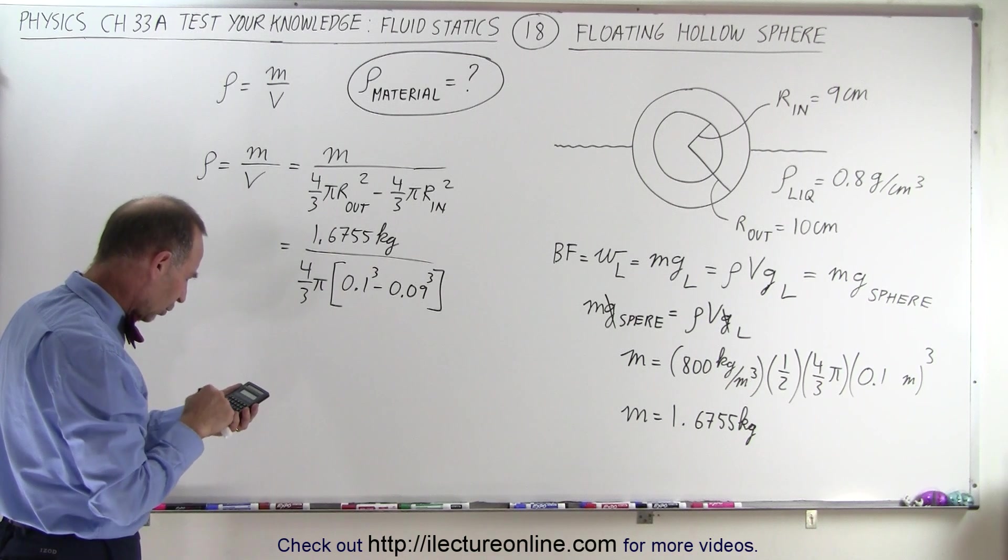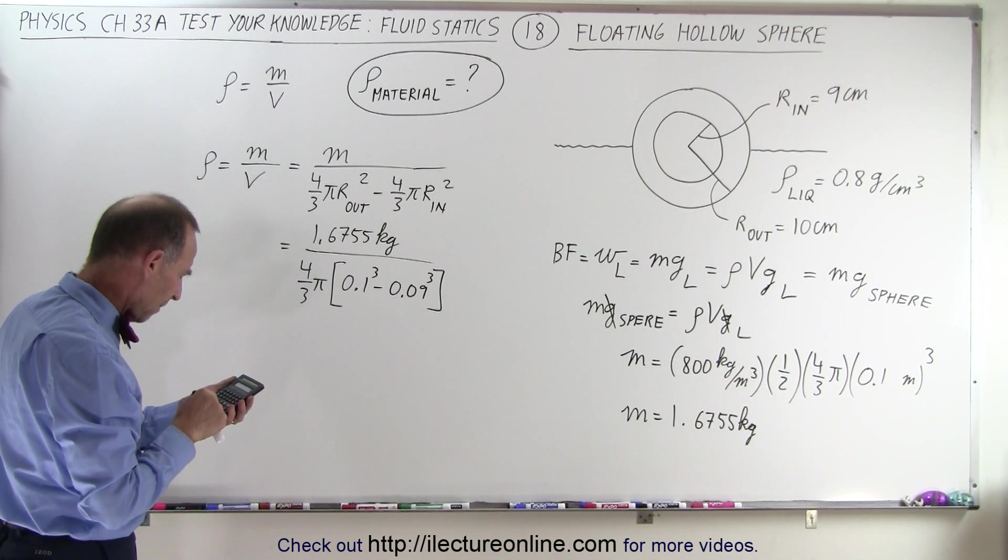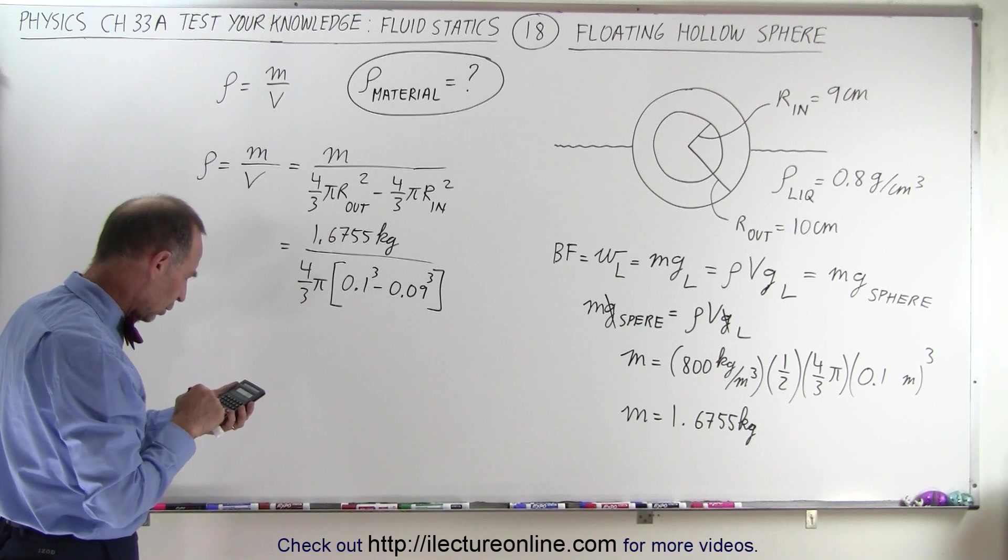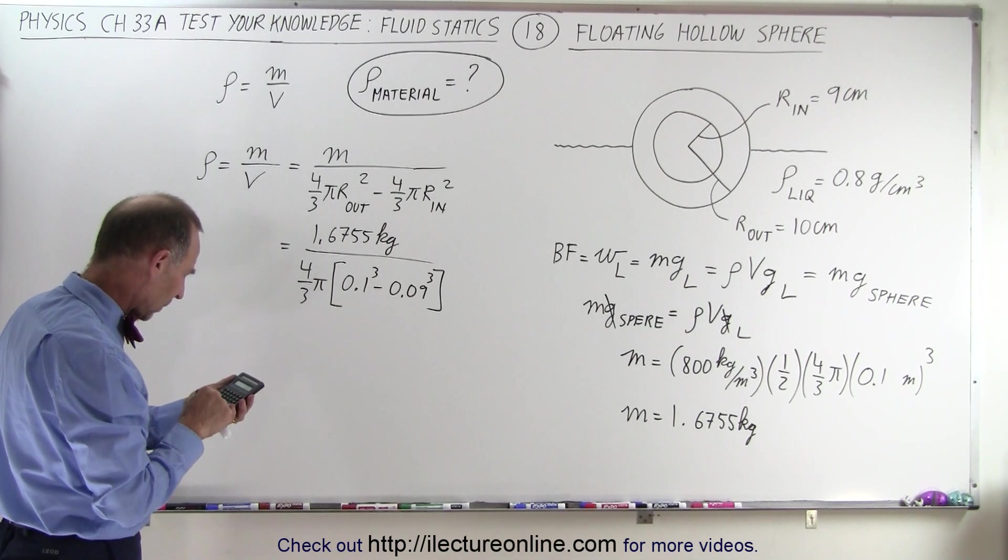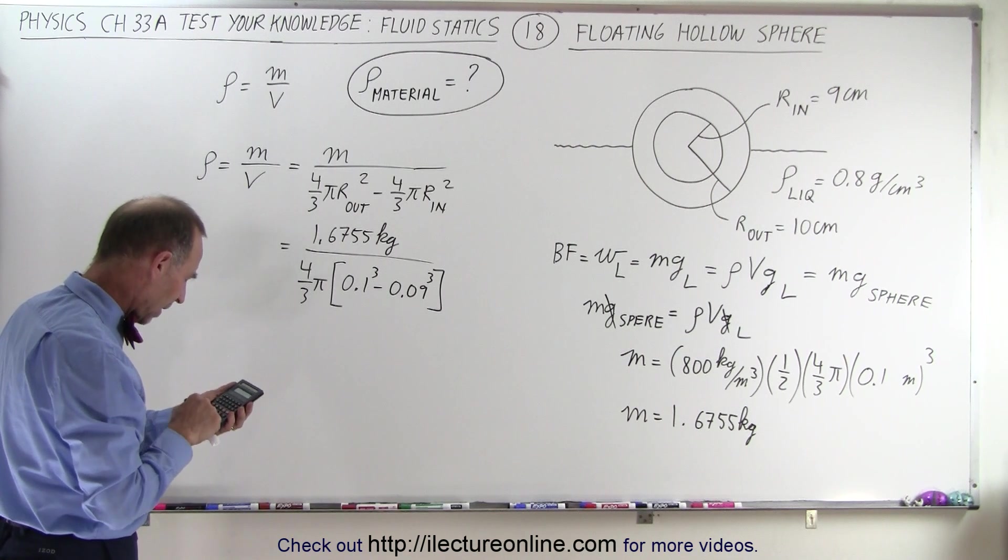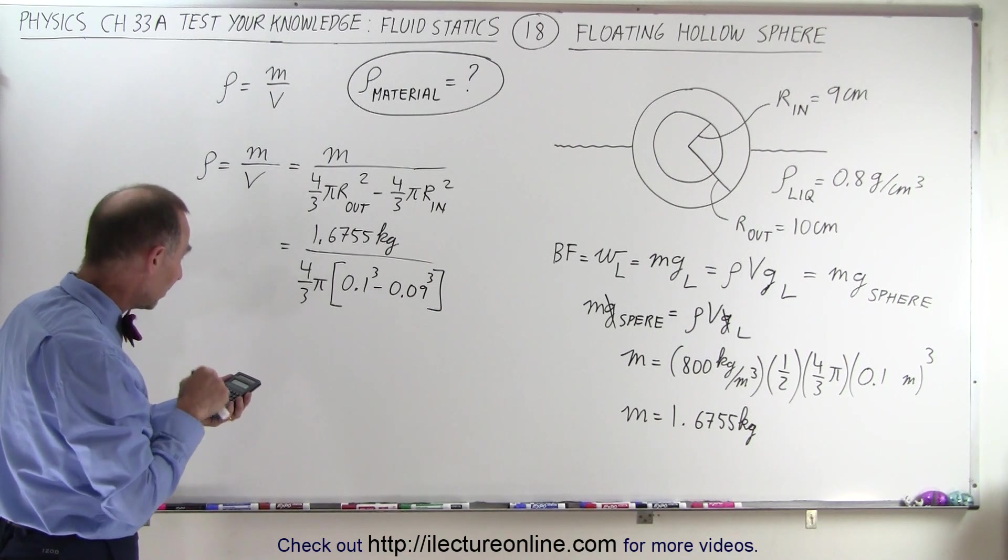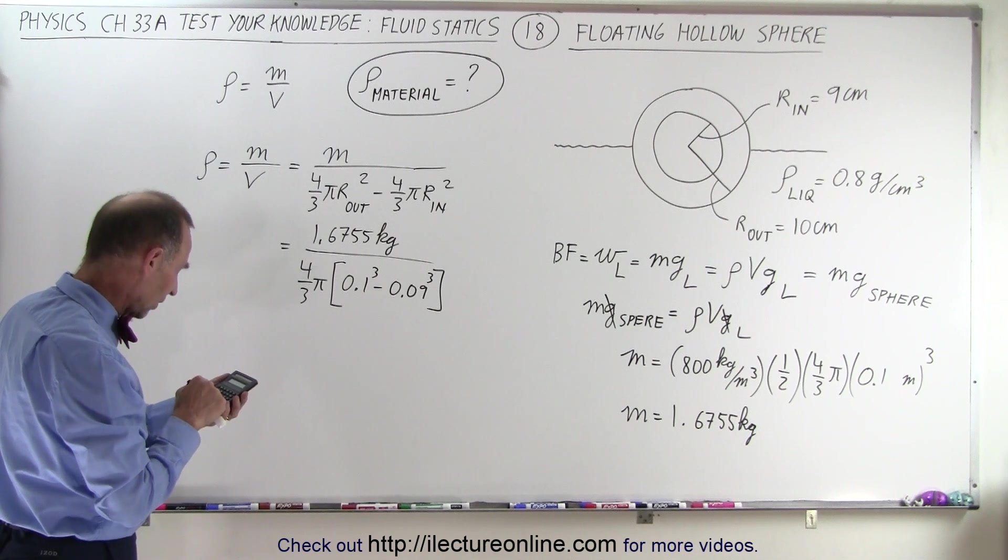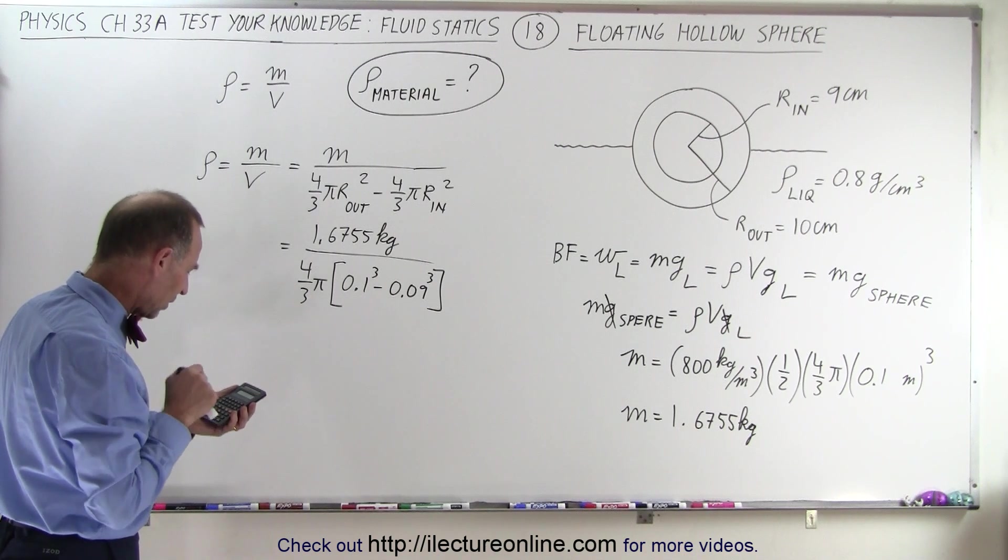We have 0.1 cubed minus 0.09 cubed multiplied times 4 divided by 3 multiplied times pi. Take the inverse of that, and multiply that times 1.6755.